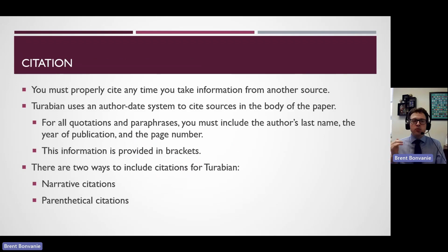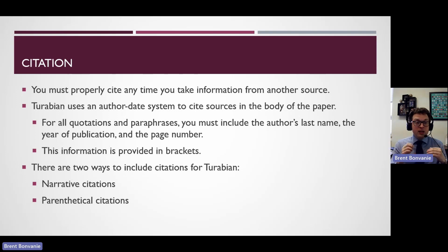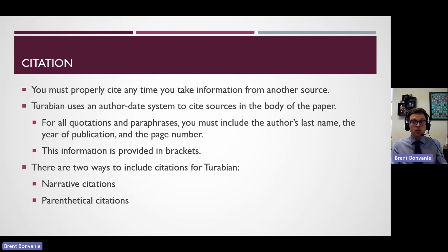Any time you take information from another source, you have to cite it. There are two different ways to cite things: through in-text citation — telling me immediately after the sentence where you got that information from — and through a reference list at the end. Let's talk about in-text citation. Every time that you quote something, paraphrase something, or bring in information from another source, you're going to reference it using an in-text citation that involves the author-date system. You need to include three pieces of data: the author's last name, the year of publication, and the page number.